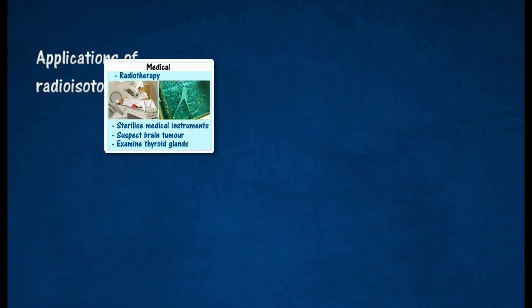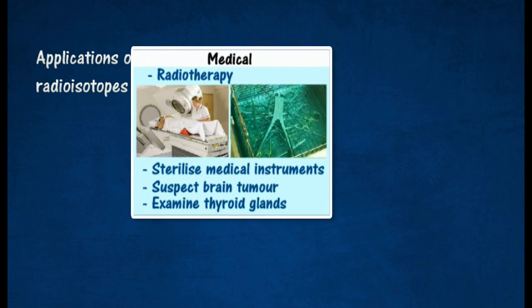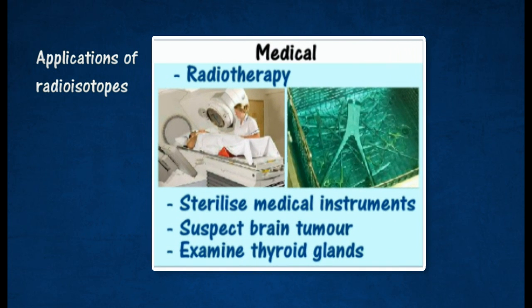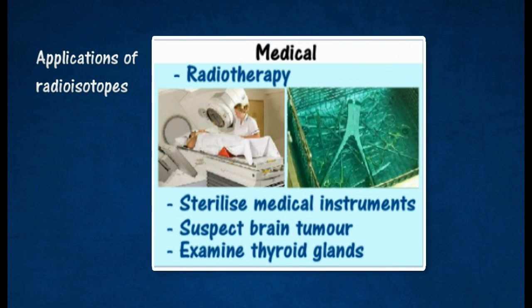In radiotherapy, gamma rays from cobalt-60 can be used to kill cancerous cells in patients. Gamma rays are also used to sterilize medical instruments.